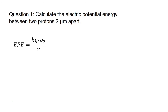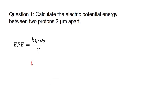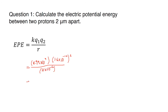Calculate the electric potential energy between two protons two micrometers apart. We substitute 8.99 times 10 to the 9 for k, the proton charge 1.6 times 10 to the negative 19 coulombs squared for Q1 and Q2, and 2 times 10 to the negative 6 meters for the distance. You are responsible for computing that result.